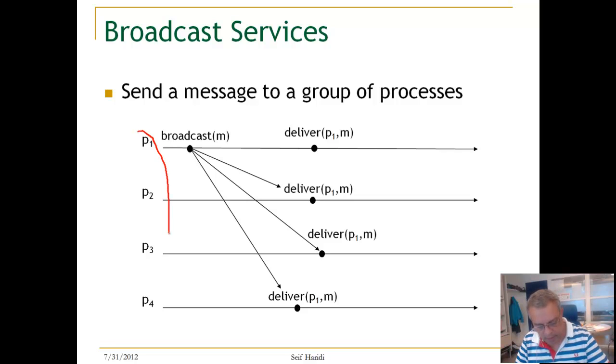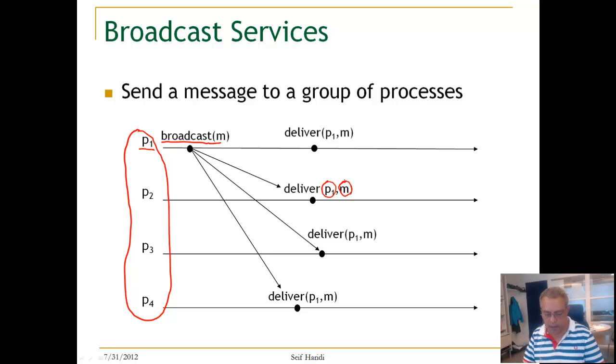We can see in this case we have P1 to P4. We assume at this stage a fixed set of processes, and any process within this group can broadcast a message. So there is an event called broadcast M. And there is a corresponding event called a delivery event. So in this case we can see a delivery event of message broadcast by P1. Delivery is from P1 of the message M to all the nodes in the system.